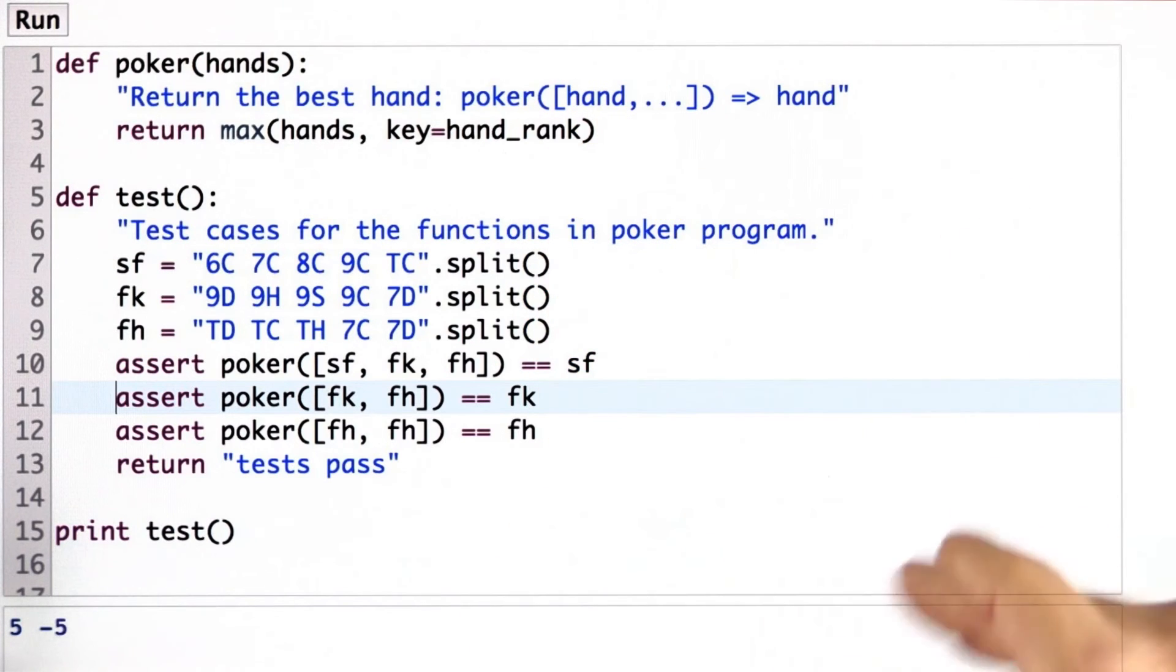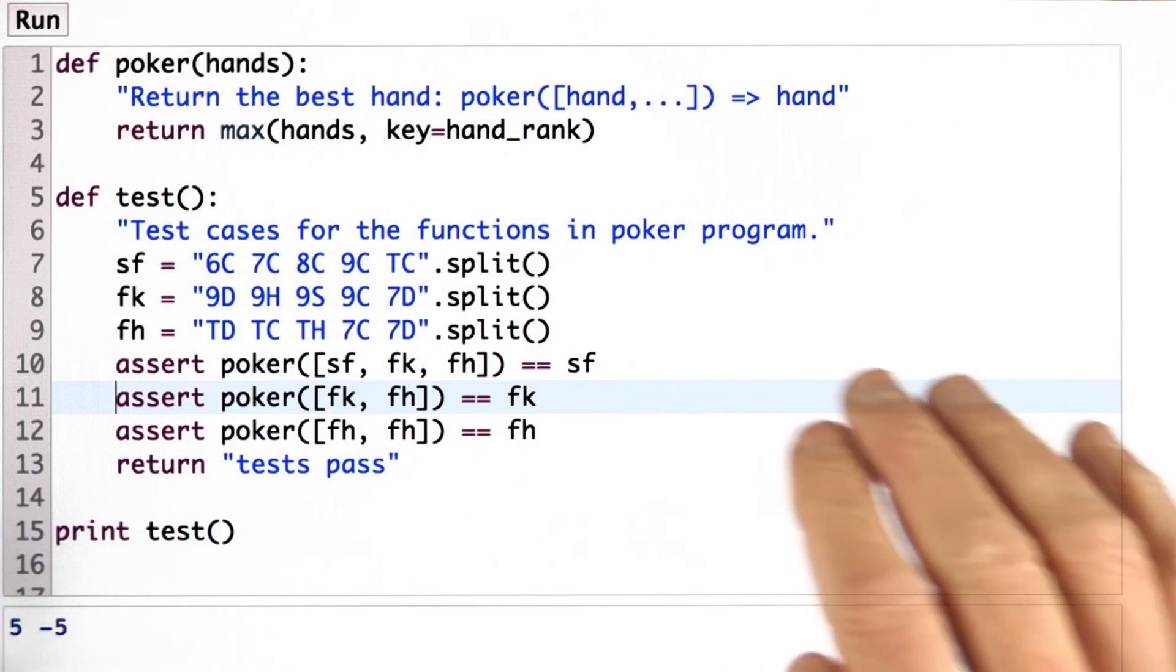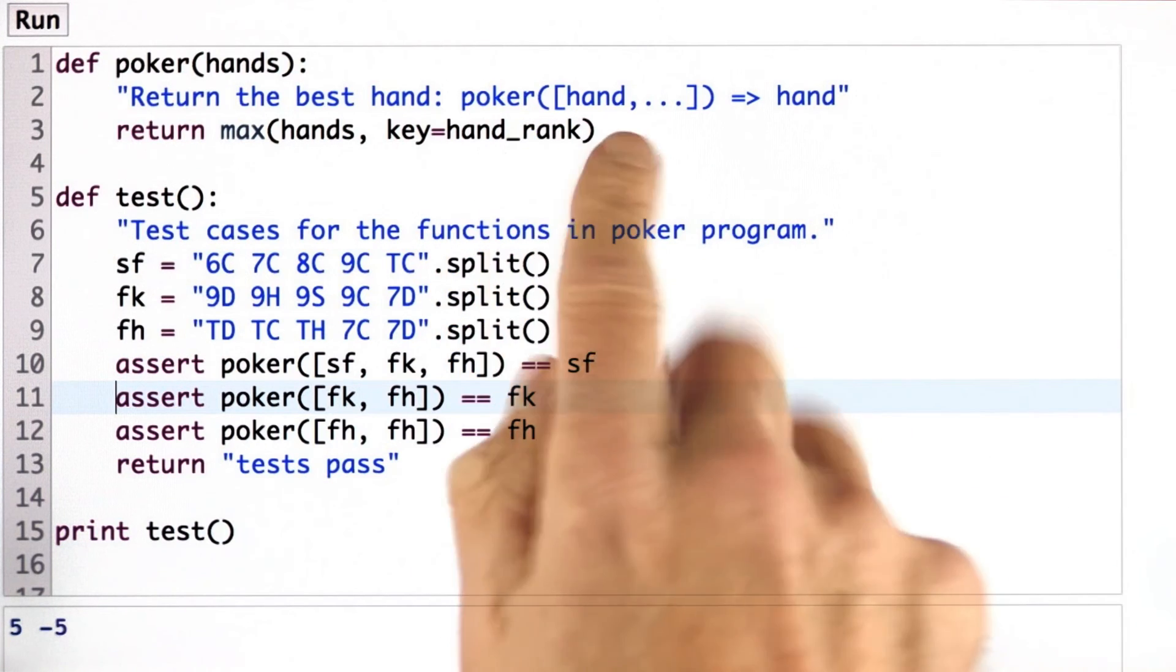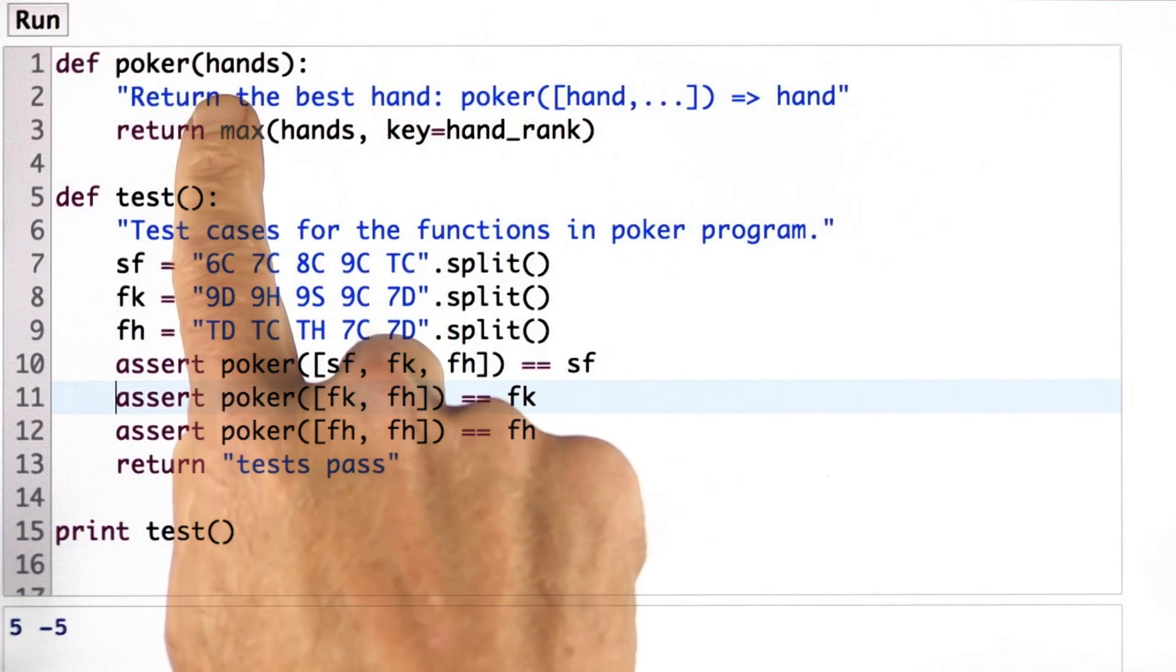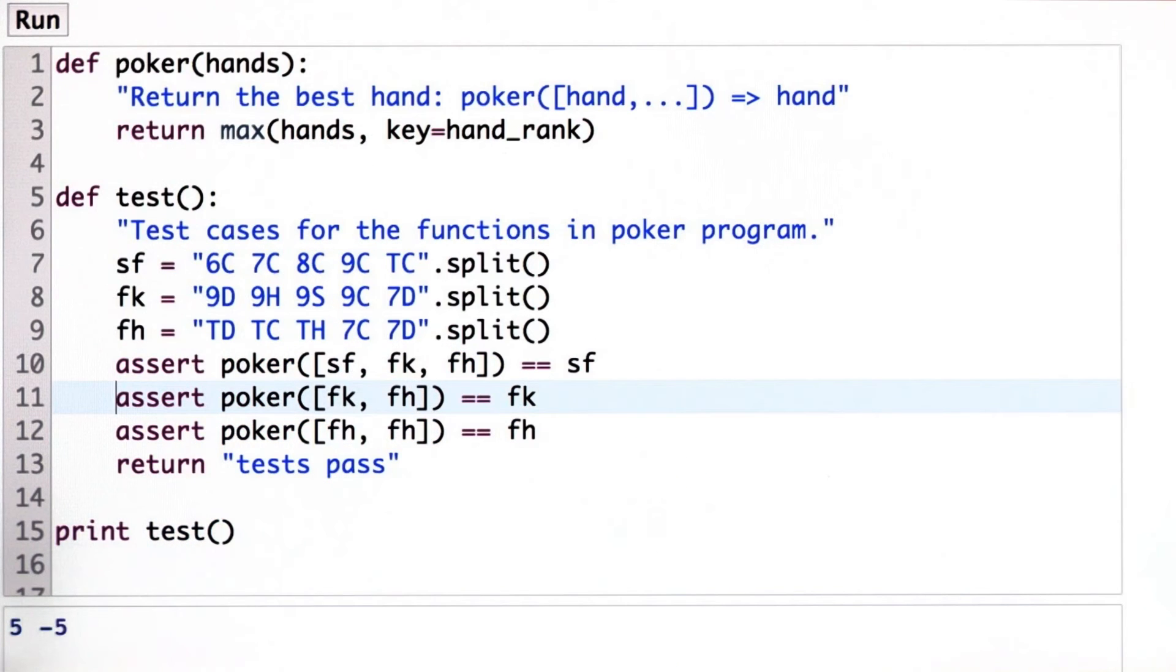And we also want to have extreme values. What if 100 people are playing poker at once? If hands is a list of 100 different hands. We want to allow that, too. It would be unusual. And we'd need a big deck of cards with 500 cards. But it could be done.